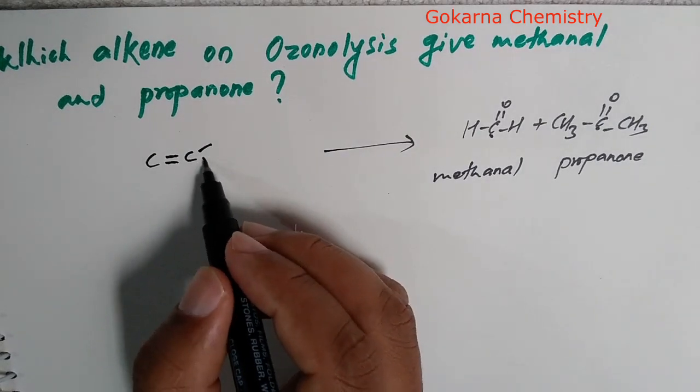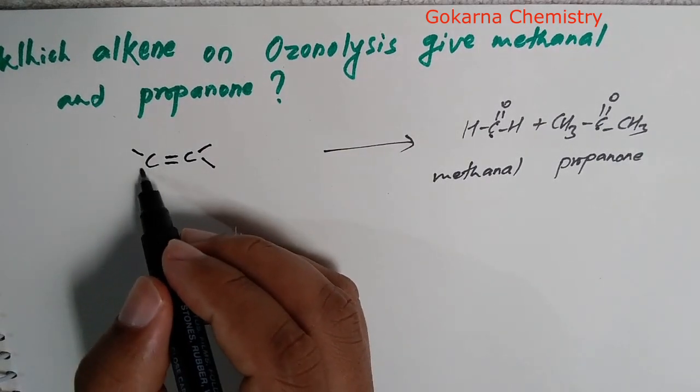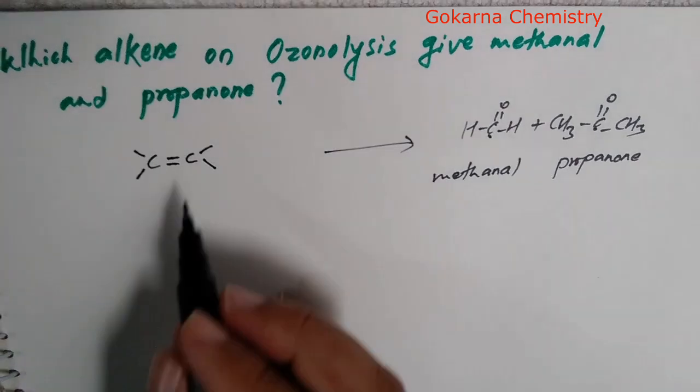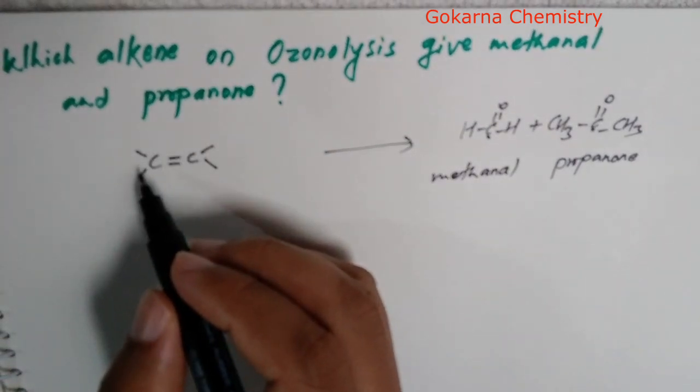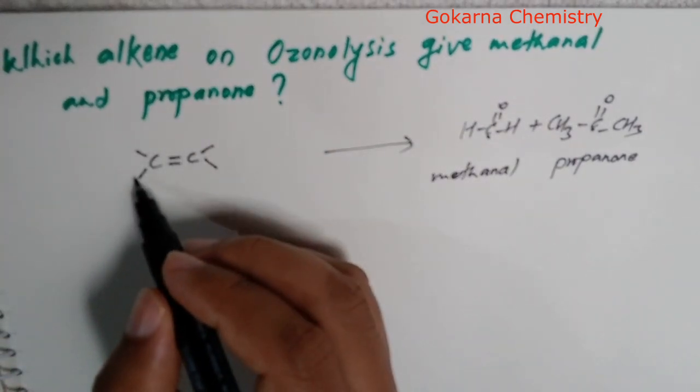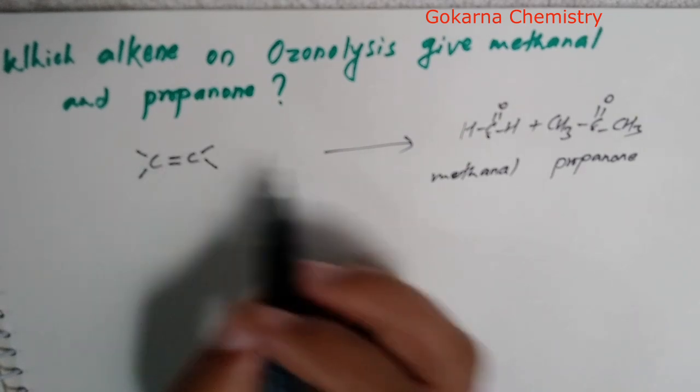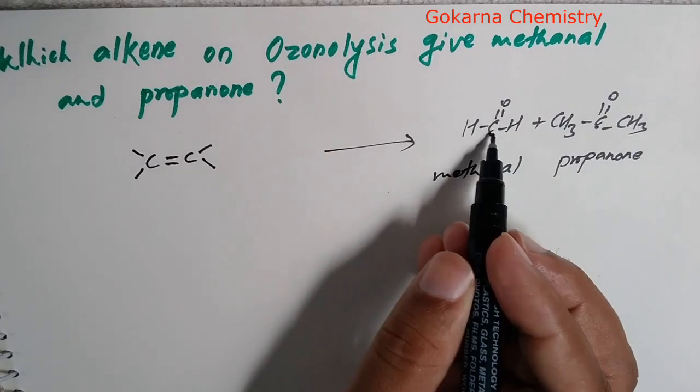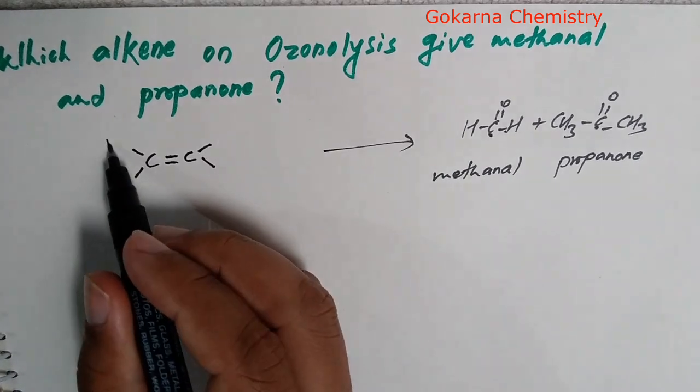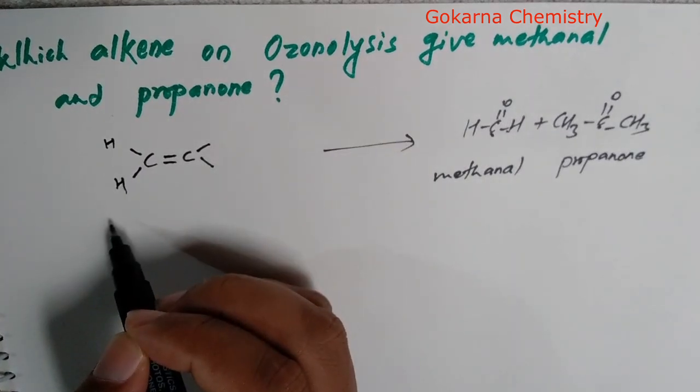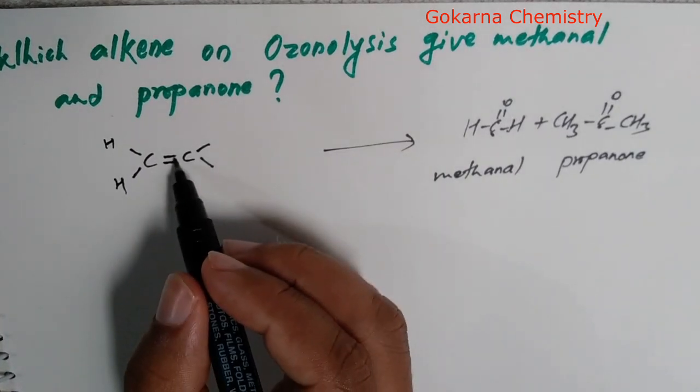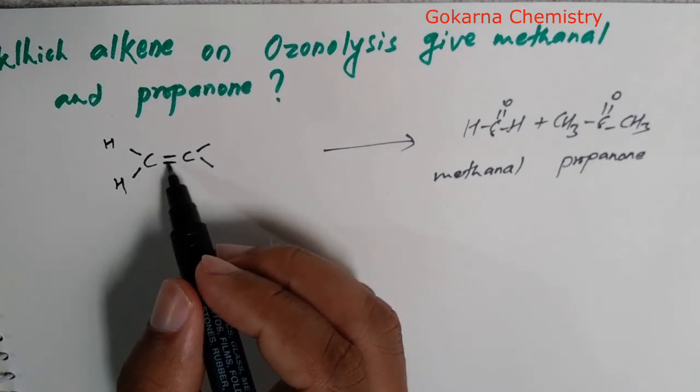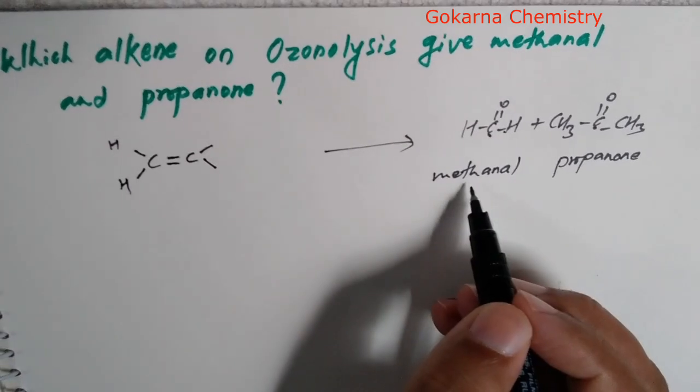Now, let's see one bond. One bond gives aldehyde and one bond gives ketone. If I am methanol, this carbon has hydrogen. This is methanol formation.